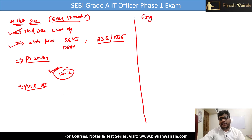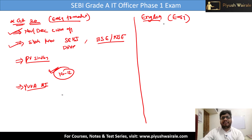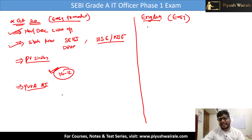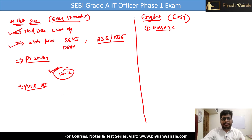The second section is English. GA was easy to moderate. English I can say is on the easier side. Within 10 minutes or less, you can solve all 20 questions. One passage was given and based on that, there were a few questions. It was a simple passage.